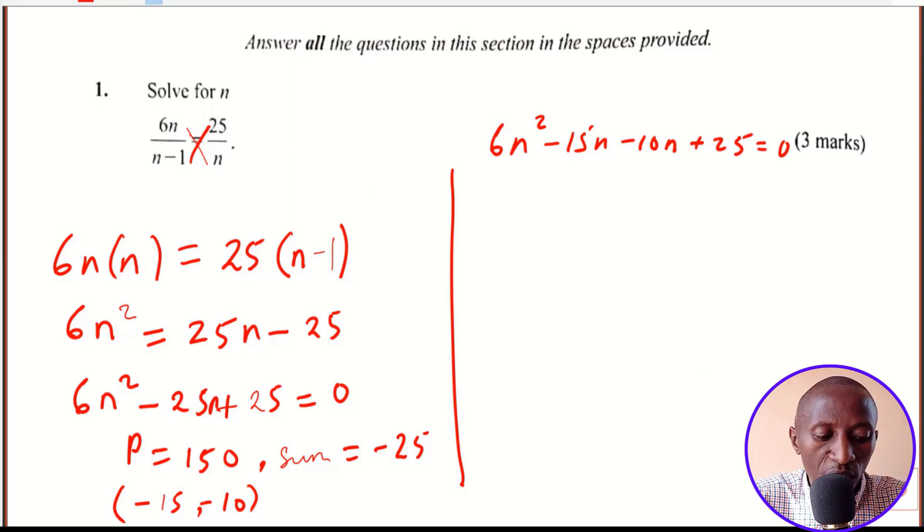So we factorize by grouping. What is the common number in 6n squared and in 15n? We realize there we have 3n. 3n is common so we factor it out and we are left with 2n in the brackets. Factoring 3n out of 15n, we are left with a 5.